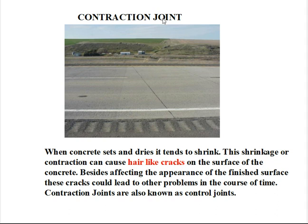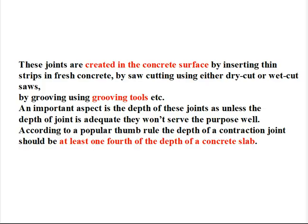And the last: Contraction Joint. When concrete sets and dries it tends to shrink. This shrinkage or contraction can cause hair-like cracks on the surface of the concrete. Besides affecting the appearance of the finished surface, these cracks could lead to other problems in the course of time. Contraction joints are also known as control joints. These joints are created in the concrete surface by inserting thin strips in fresh concrete, by saw cutting using either dry cut or wet cut saws, or by grooving using grooving tools. An important aspect is the depth of these joints, as unless the depth of the joint is adequate they won't serve the purpose well.